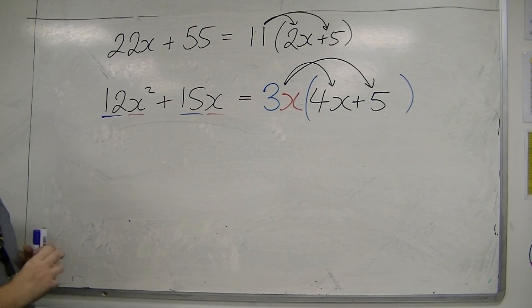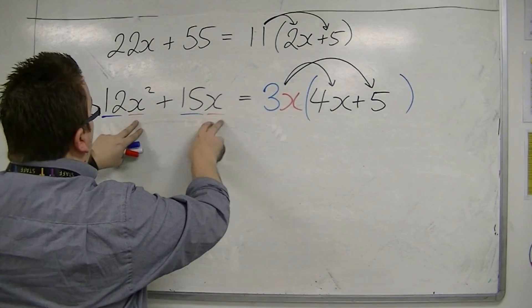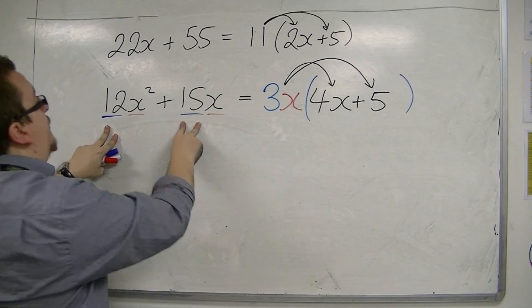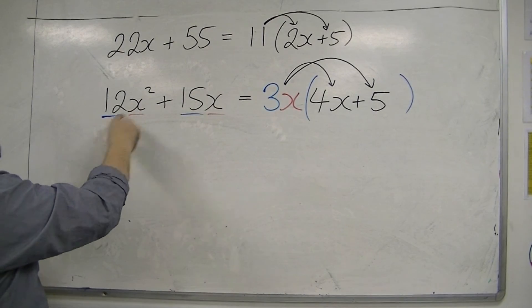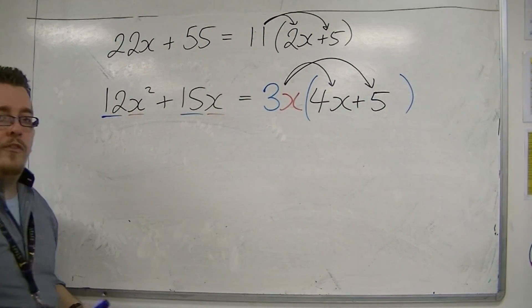But really, the first thing you want to do is look at the numbers. Ignore the algebra, look at the numbers, find the highest common factor, the largest number that goes into both, that can be brought outside of the bracket.